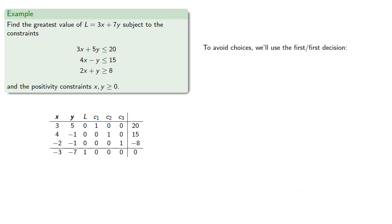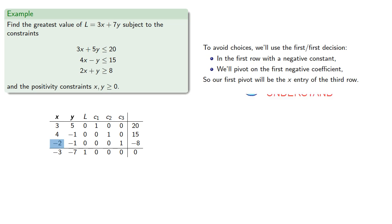Now, to avoid having to make choices, we'll use the first-first decision. So in the first row with a negative constant, we'll pivot on the first negative coefficient. So our first pivot will be the x entry of the third row. So our entering variable is x, which is now basic, and our exiting variable is c3, which is now free. And if we pivot, we get...